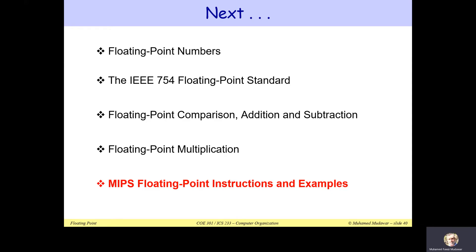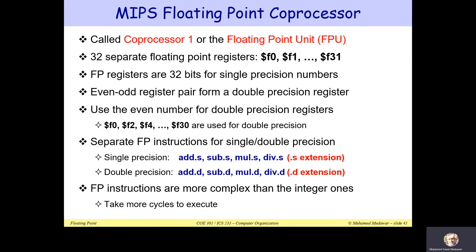In this lecture, I will cover the MIPS floating point instructions and examples. Recall from last lecture that I introduced the MIPS floating point coprocessor. It was called coprocessor back in the 1980s when MIPS was introduced because at that time it did not fit on the same chip — it was a separate chip. Today it is called a floating point unit and it can fit inside the same CPU chip, and in fact you can have many of these floating point units inside the same chip.